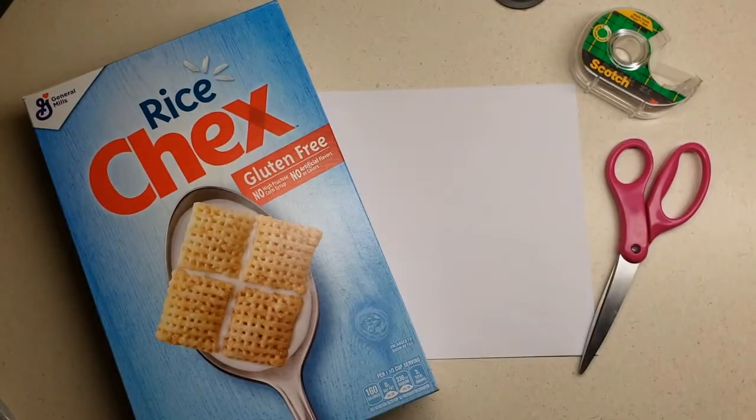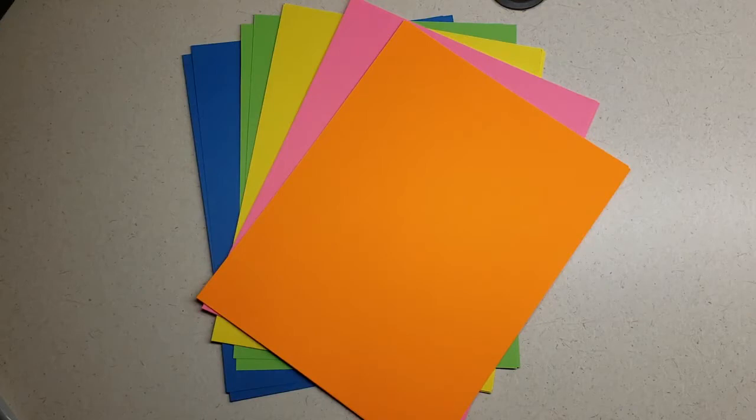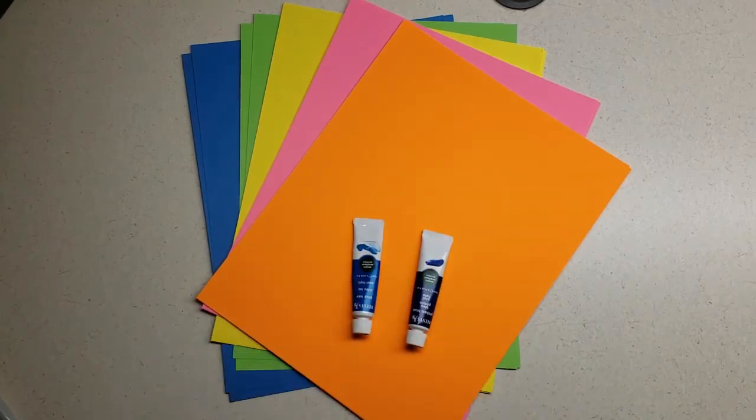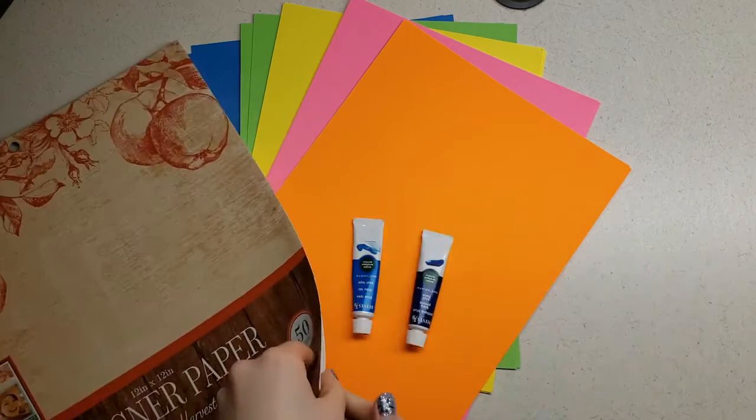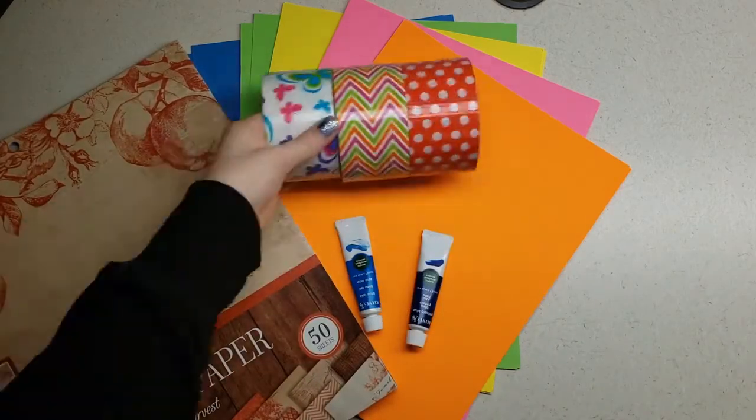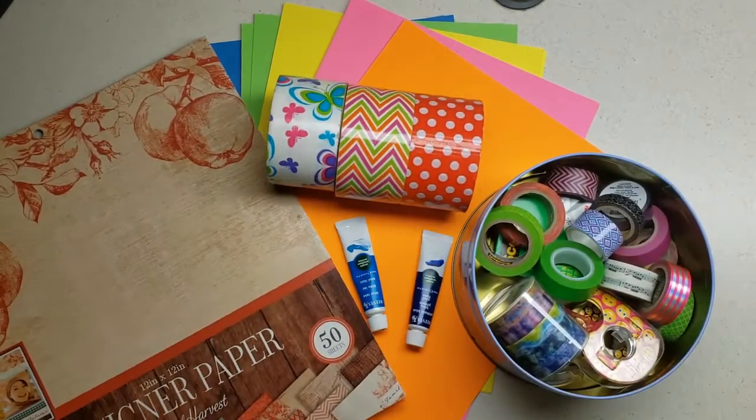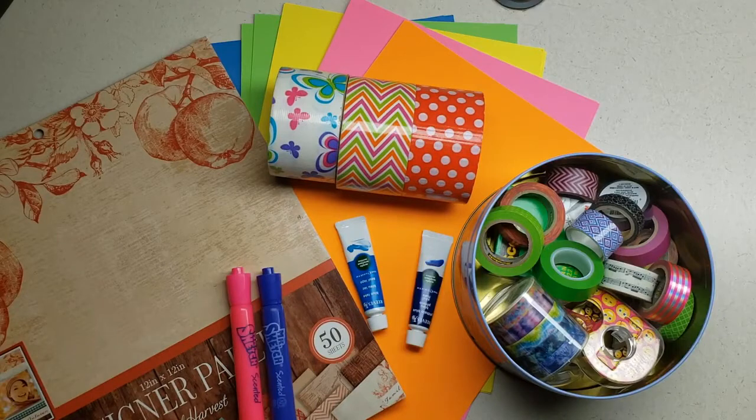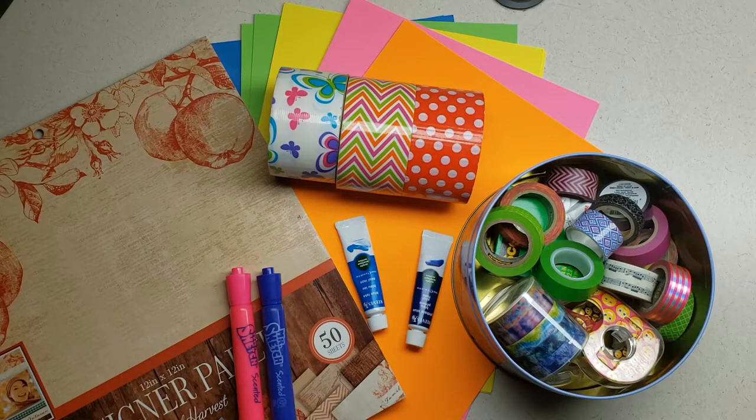All we're going to need today is some paper, scissors, tape, a cereal box or some other form of thin cardboard, and some decorating supplies. The decorating supplies are to decorate the spine as well as the front and back covers of your journal. You could use paint, construction paper, a photo collage, scrapbook paper, stickers, duct tape, washi tape, markers, anything really. The decorating is optional, but I encourage you all to get creative and personalize your journal.